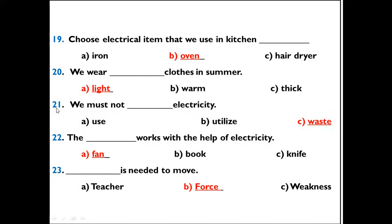Question 20: We wear dash cloth in summers. Options: Light, warm, thick. The right option is light — we wear light clothes in summer. Question 21: We must not dash electricity. Options: Use, utilize, waste. The right option is waste — we must not waste electricity.